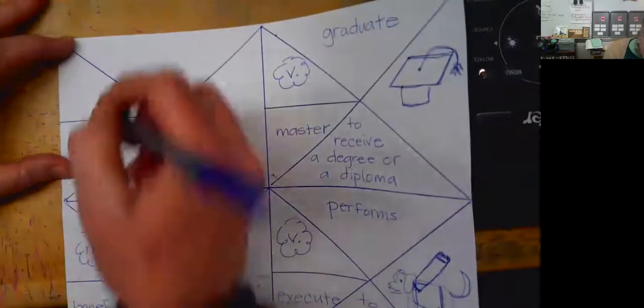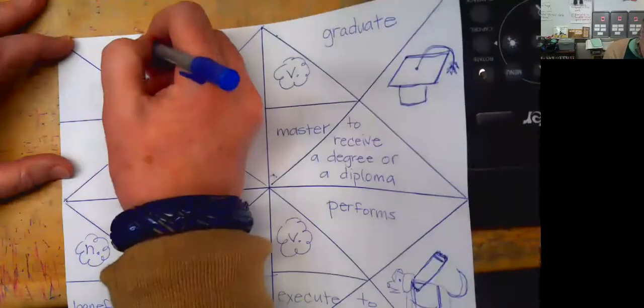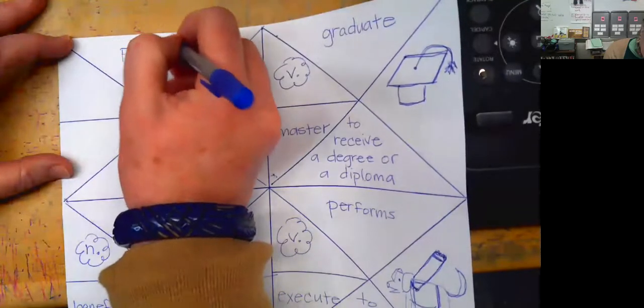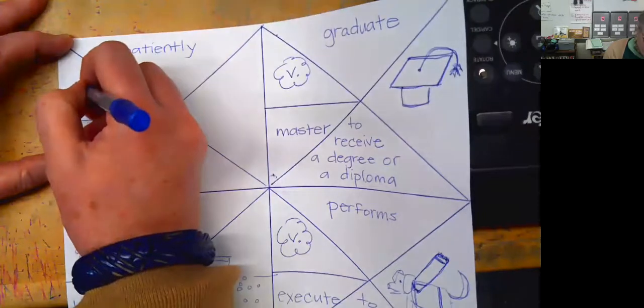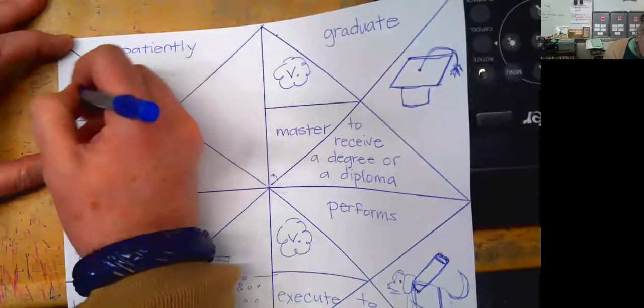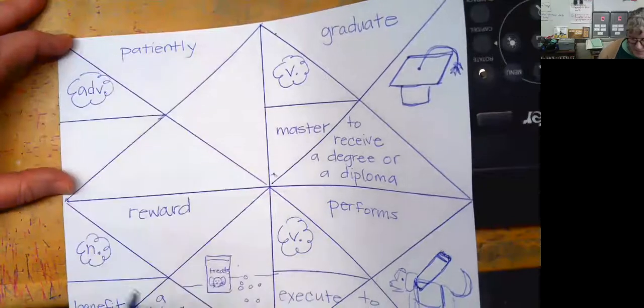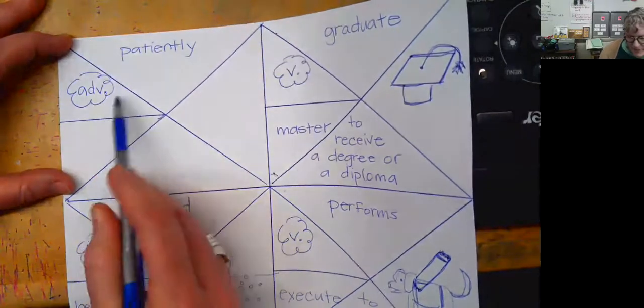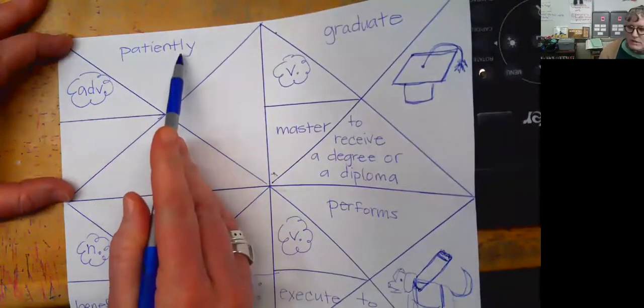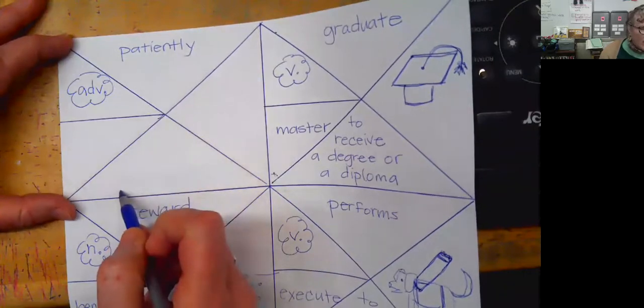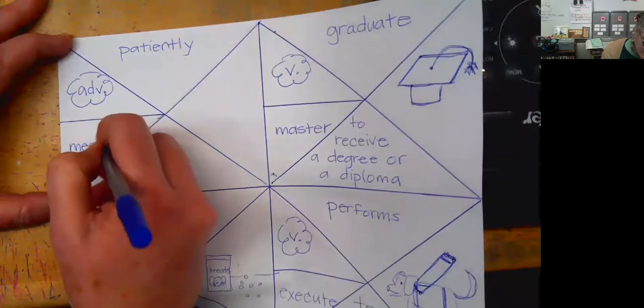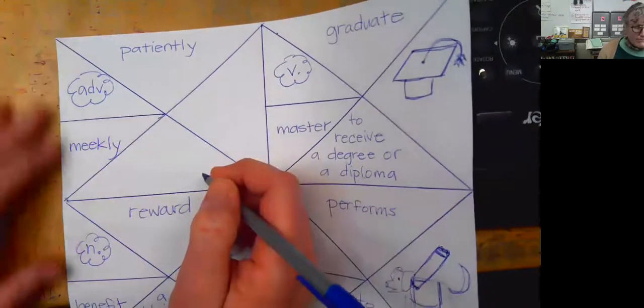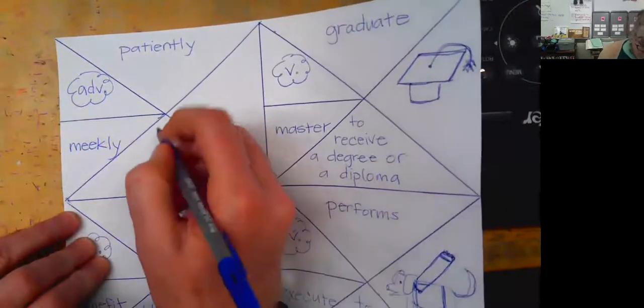Patiently is our last word. Patiently is an adverb. We just talked about adverbs last week or this week. So patiently describes how someone does something, right? So it's got an L Y on it. Meekly is our synonym. And it means to forbear.